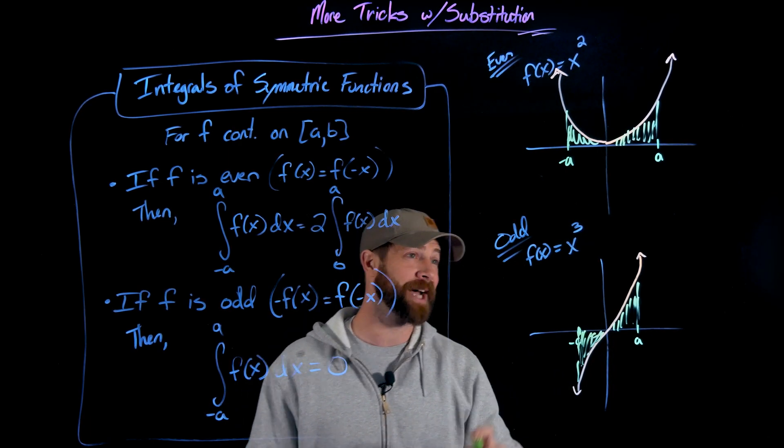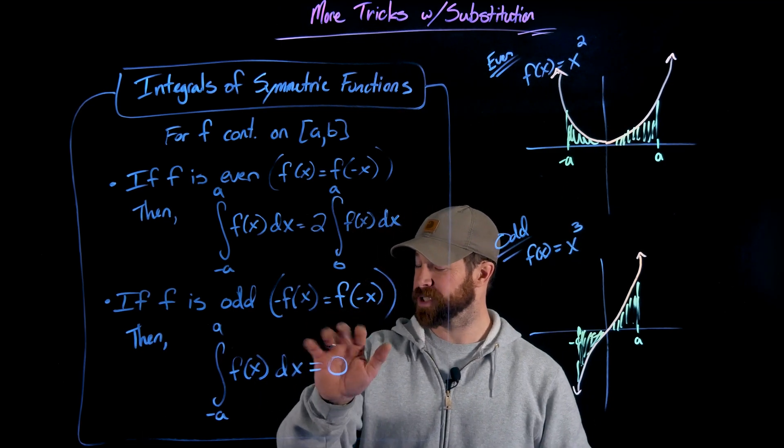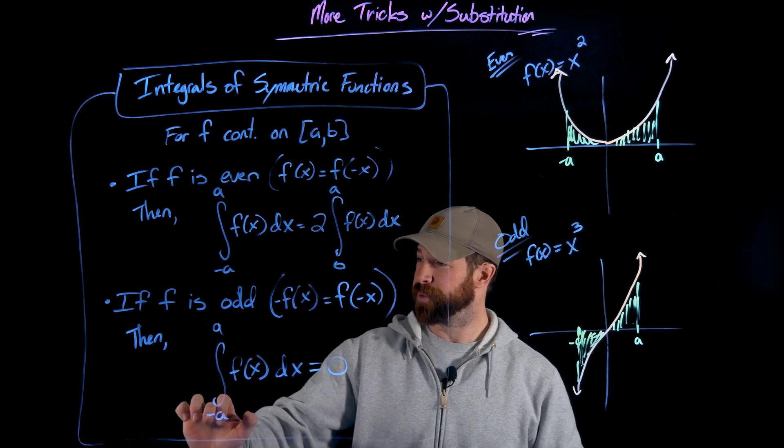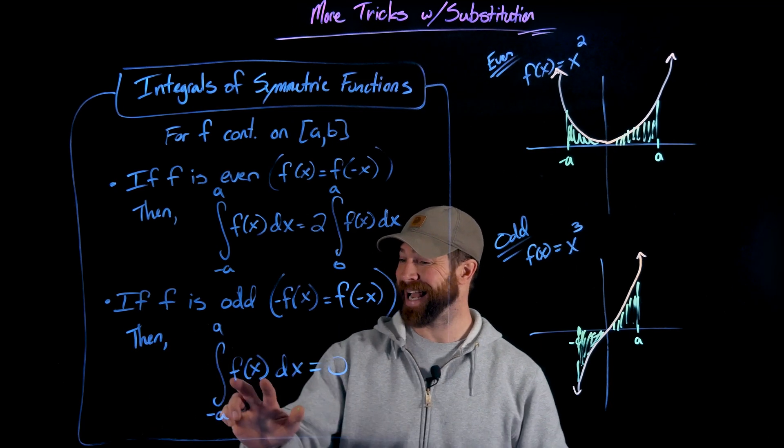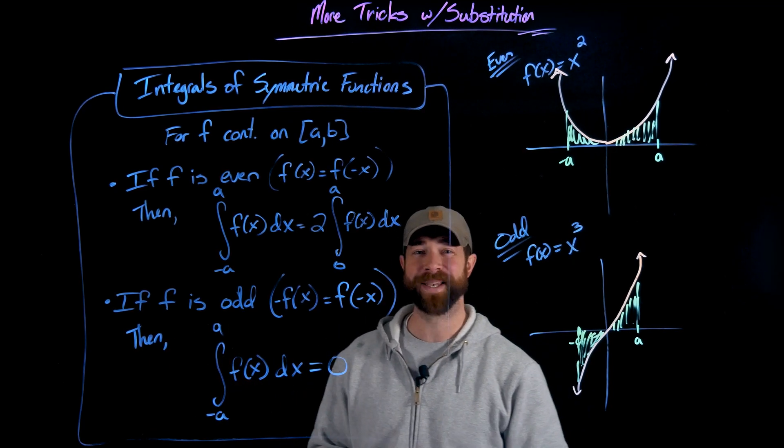And the point is, anytime you have an odd function that follows this relationship right here, if you compute the integral from negative a to a of that function, it will always end up being zero.